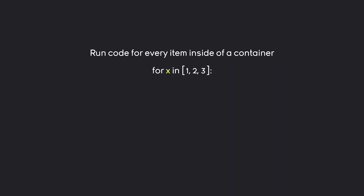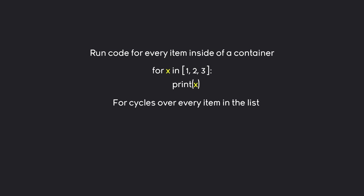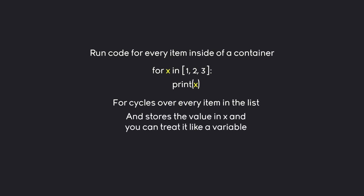For example, we want to run a for loop for every item inside of a list that contains 1, 2 and 3. Python goes through this entire list and picks every single value — 1, 2 and 3 — and for each cycle it assigns the value to x, although you could name it whatever you want. If you add a print inside of this for loop you would print 1, 2 and 3. It cycles over every single item in the list, stores the value inside of x, and you can treat it like a variable.